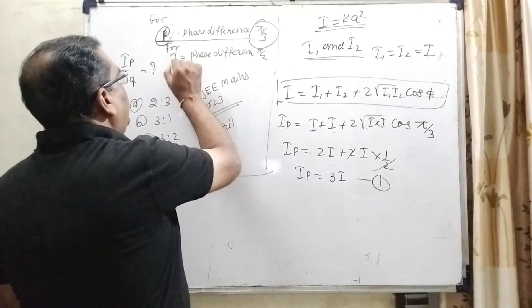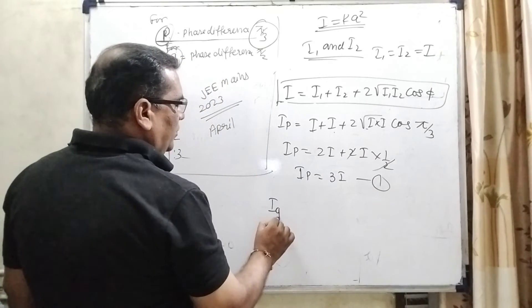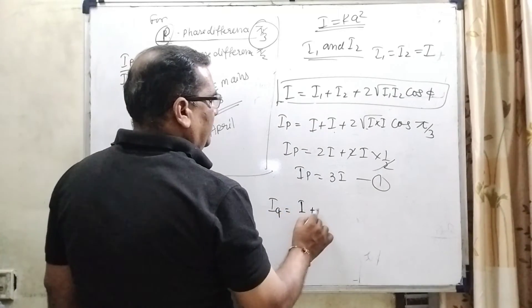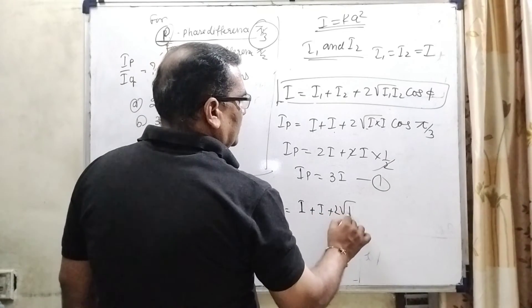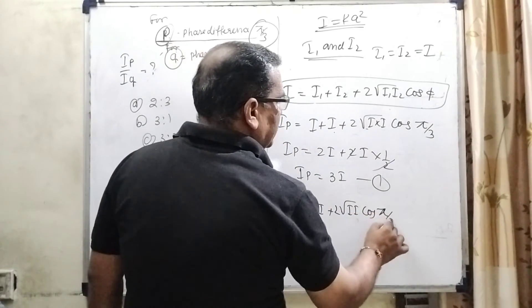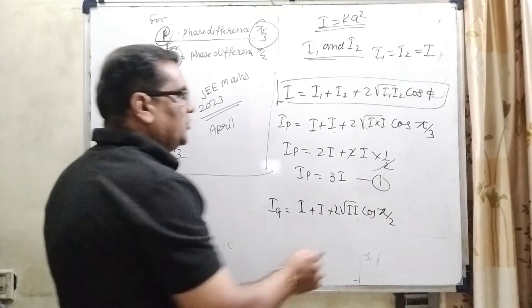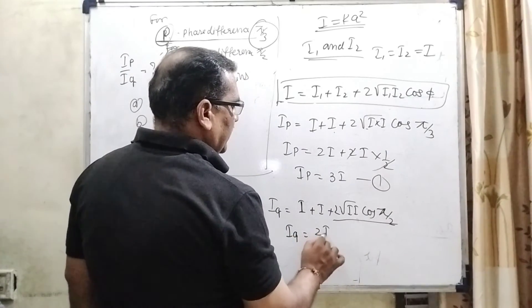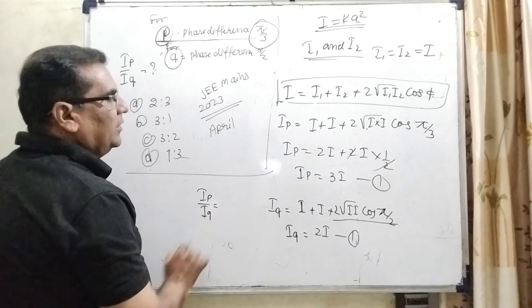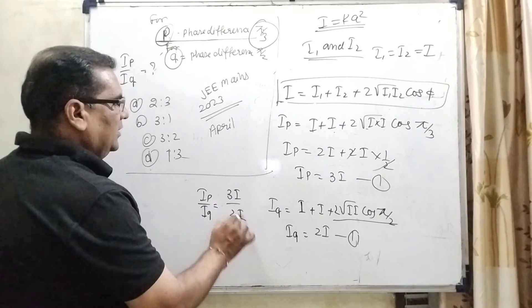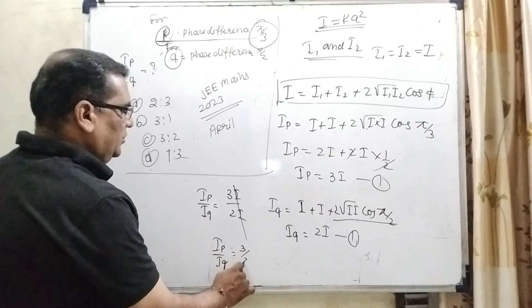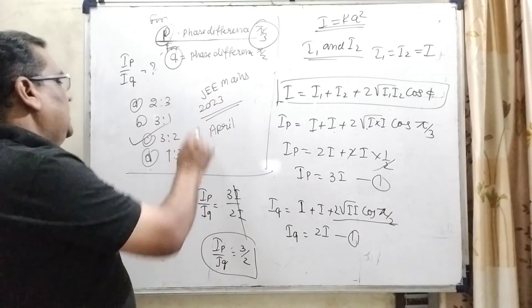And for the point Q, then intensity IQ equal to, here again for the same amplitude, it means same intensity. So here I plus I plus 2 root I I cos π by 2. Here IQ is equal to 2I. Now IP by IQ is equal to 3I by 2I. Here I cancels out. So the ratio is 3 to 2. So here option C is correct.